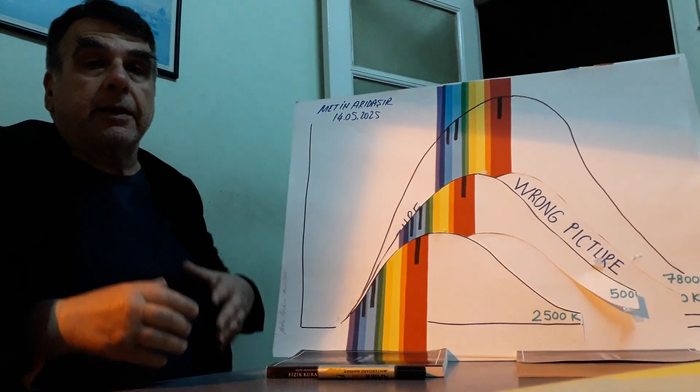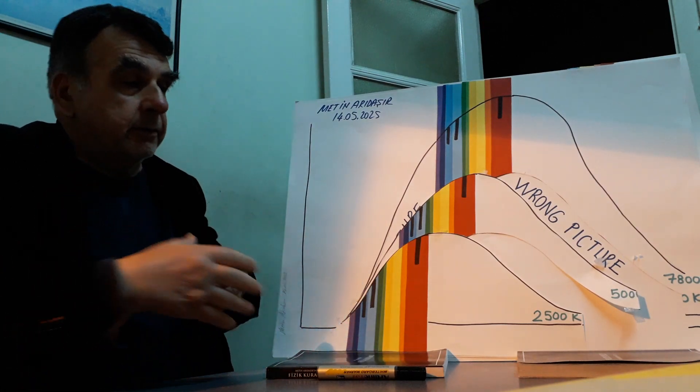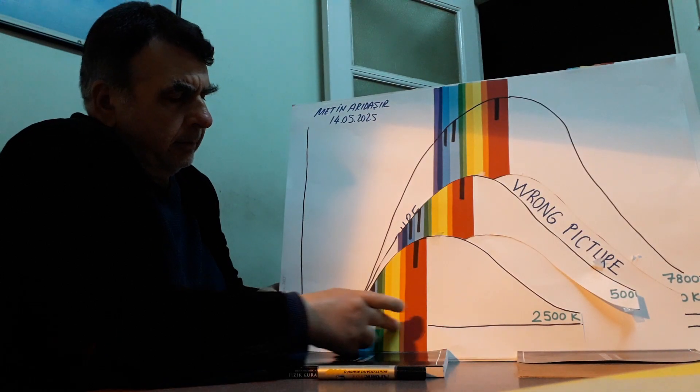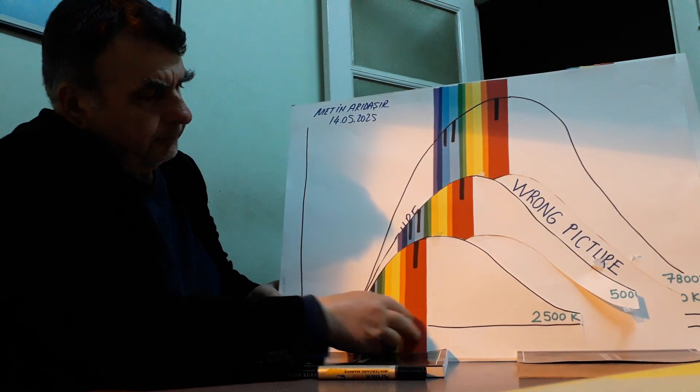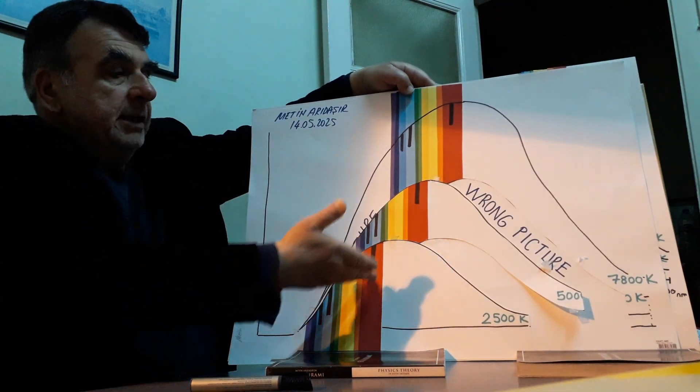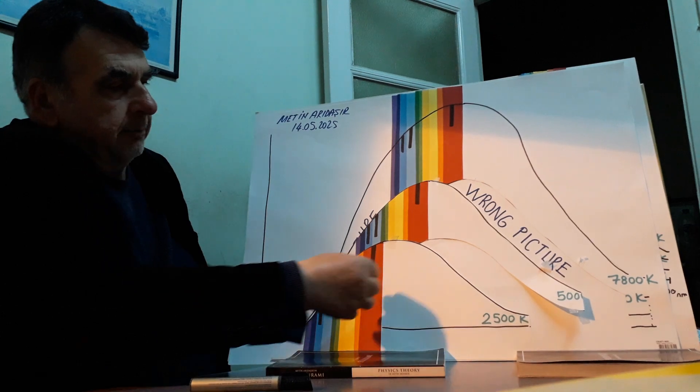When you choose the reference smallest continuous spectrum, then you say Earth lab reference visual band, visible spectrum. This is now accepted physics wrong picture.